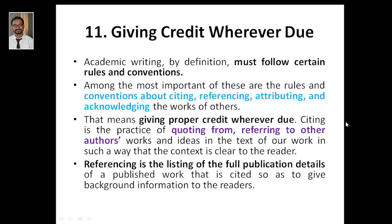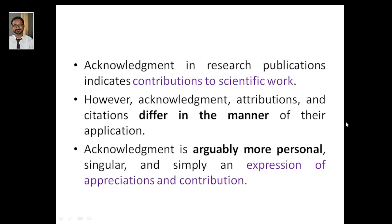Referencing is the listing of the full publication details of the published work that is cited, so as to give background information to the reader. Any author can cross-verify or see more details there. Acknowledgement in a research publication indicates contribution to the scientific work — any contribution from the scientific work, maybe fundings or maybe the lab assistant who is helping you, maybe your family. Acknowledgement, attribution, and citation differ in their manner of application, even though they sound the same.